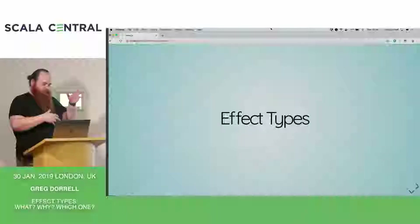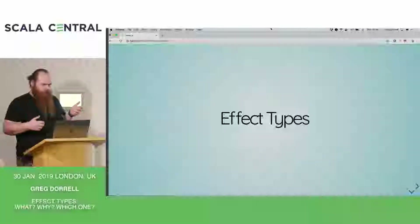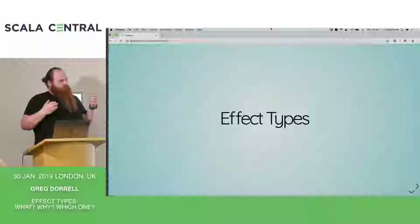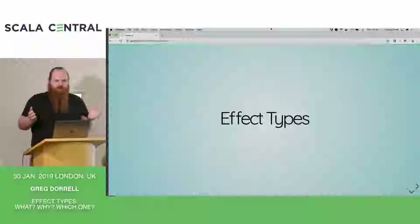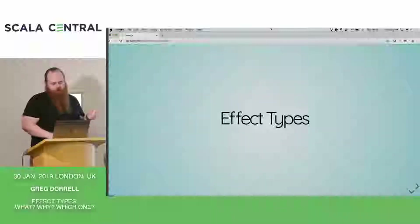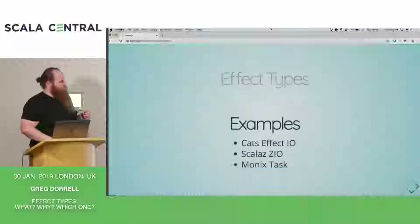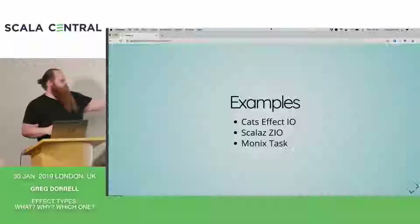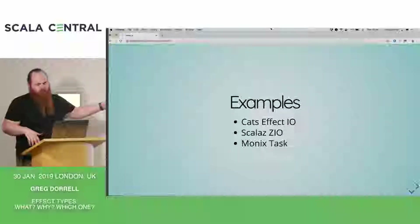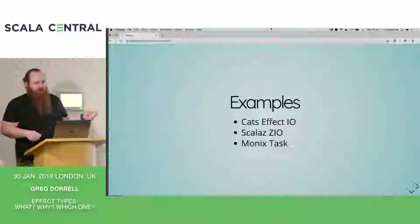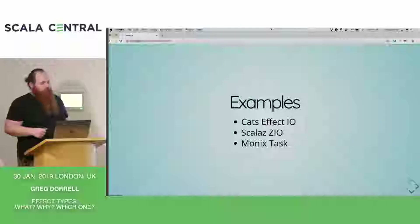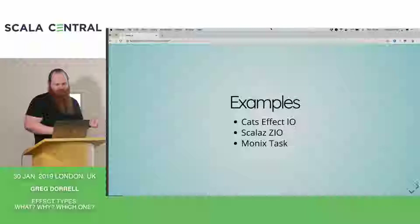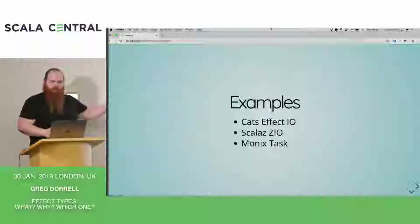There are a bunch of different kind of effect types out there, but we're going to focus on general purpose effect types. These exist to encapsulate any side effect in code you have, so they're really general. A bunch of these have popped up in the Scala community in the last few years: Cats Effect IO, Scala ZIO, and Monix Task. We're going to try and justify why you should use effect types — why you shouldn't just use future — and compare and contrast these a little bit.